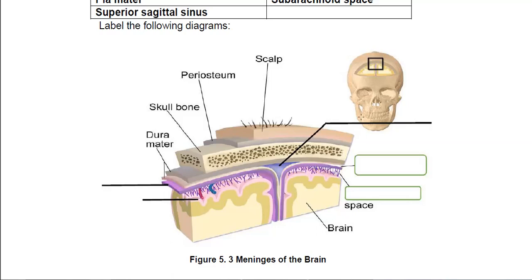This larger cavity here is the superior sagittal sinus. The top part of the dura mater stays right under the skull, whereas the lower part — the arachnoid and pia — fold in between the two hemispheres of the brain. When they fold in, we're left with this empty space, which is the superior sagittal sinus.